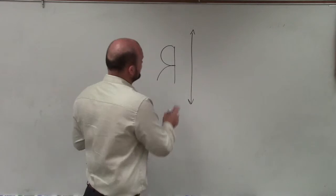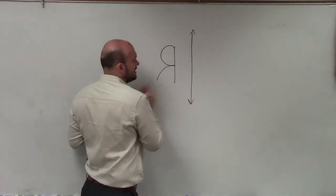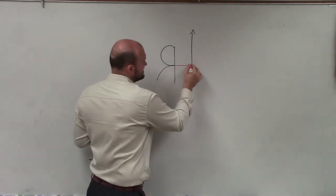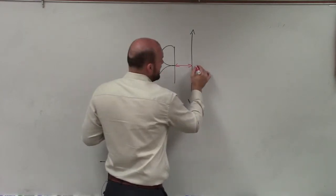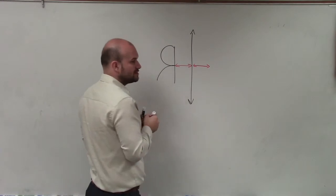And what's important, especially about this when we have a figure that's off of the line of symmetry, is notice this distance here, right? The distance from our pre-image to our line of symmetry. That has to be the same when we reflect this over.